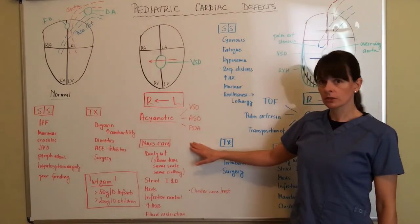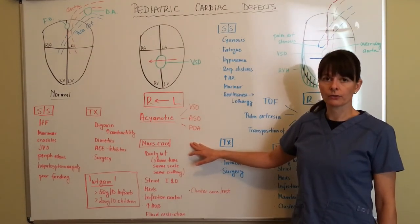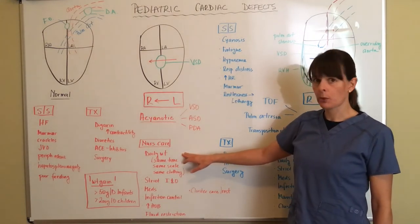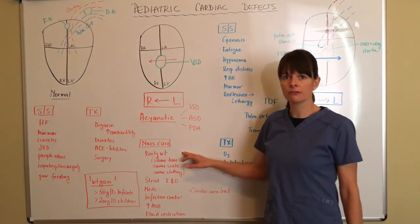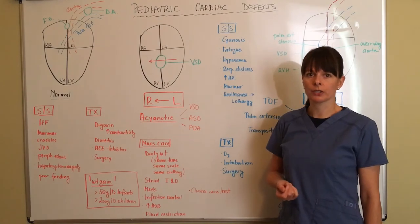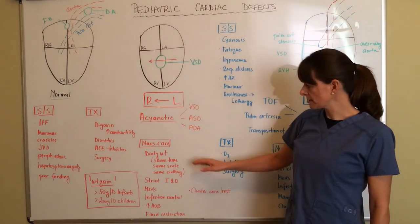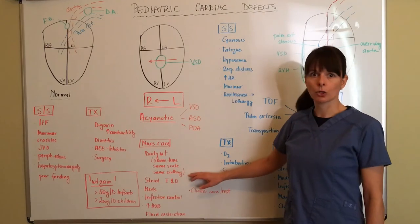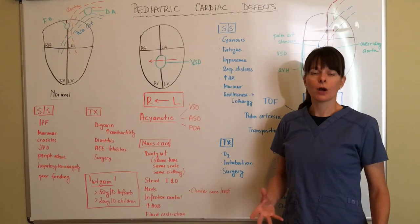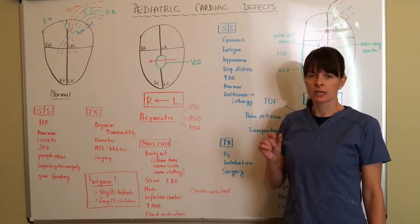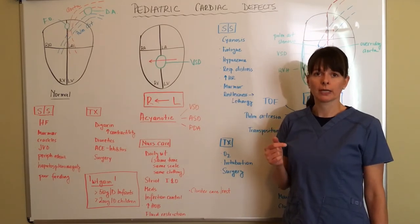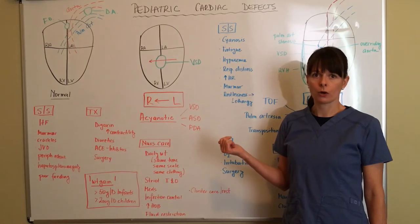Now nursing considerations or nursing care for children with acyanotic defects are very important. So we want to do daily weights. Again, just like in adults with congestive heart failure, because we want to see how much weight are they gaining, how much fluid are they retaining. And I wrote this on here, same time, same scale, same clothing. That is very important, because infants, their overall body weight is not very much, so the difference of five grams, six grams, ten grams, might make a huge difference in determining how their fluid status and the heart overall is doing.